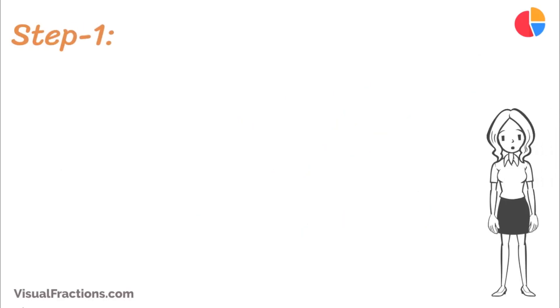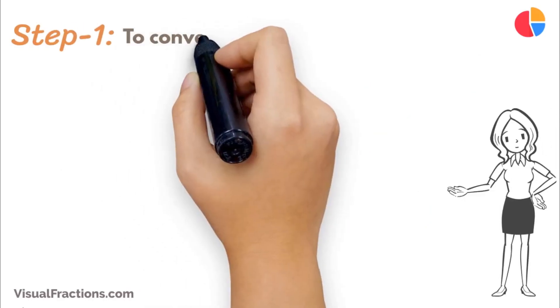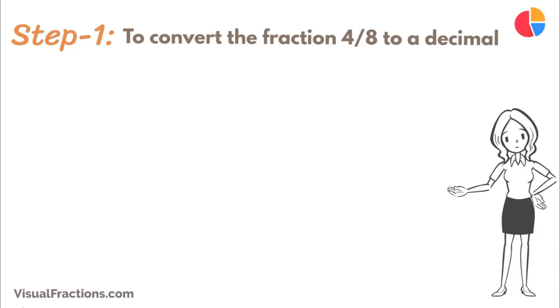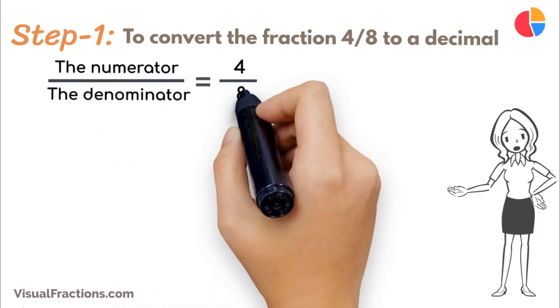The first step in converting fraction 4 eighths to a percent is to convert this fraction to a decimal. We do this by dividing the numerator, the top number, which is 4, by the denominator, the bottom number, which is 8.